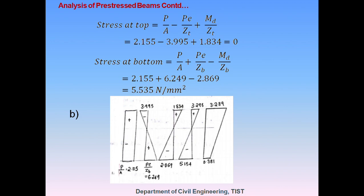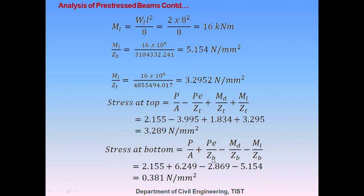For Case 2 — pre-stress plus self-weight plus live load — all other terms remain the same; the only addition is ML/Z-top and ML/Z-bottom. ML = WL × L²/8, where WL = 2 kN/m as given. Substituting all values, the stress at the top fiber is 3.289 N/mm² and the stress at the bottom fiber is 0.381 N/mm².